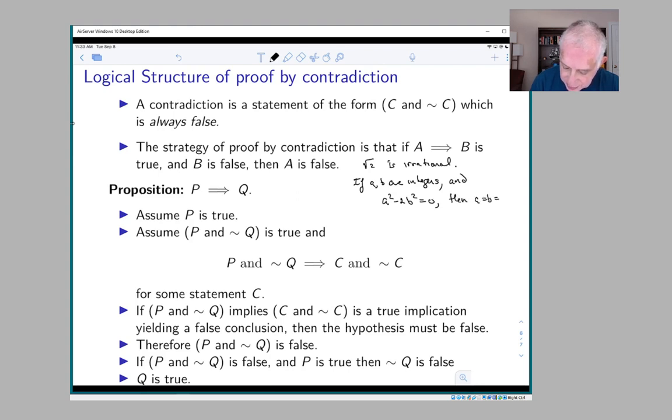So written in this form, remember the idea was if the square root of 2 was rational, then it would be the case that the square root of 2 would be equal to a over b. So 2 would be equal to a squared over b squared, and from that you could get this equation a squared minus 2b squared.